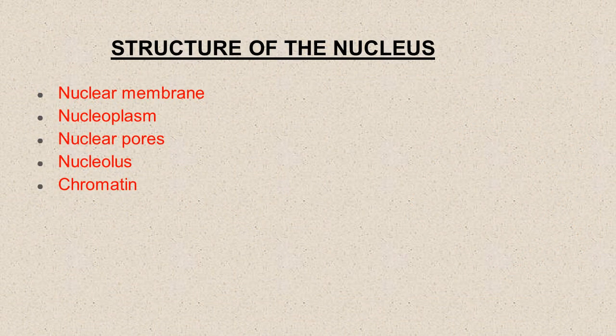Structure of the nucleus: the nucleus is a large, centrally located, spherical cellular component. It is bounded by two nuclear membranes, both forming a nuclear envelope. The nuclear envelope contains many pores known as nuclear pores and encloses the liquid ground substance called the nucleoplasm. The nucleus contains the nucleolus and chromatin. Chromatin is a hereditary material.